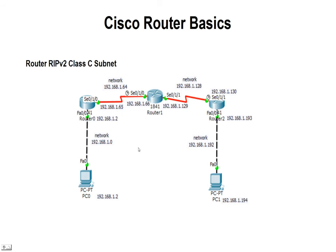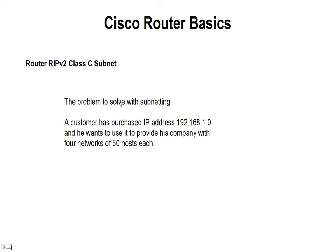The problems that we usually get on a CCNA test are problems such as this — the problem is to solve with subnetting. A customer has purchased an IP address — this is just theoretical, you can't even purchase this because it's a private IP address — 192.168.1.0. He wants to use it to provide his company with four networks of at least 50 hosts each, and we can actually do that with this individual IP address.